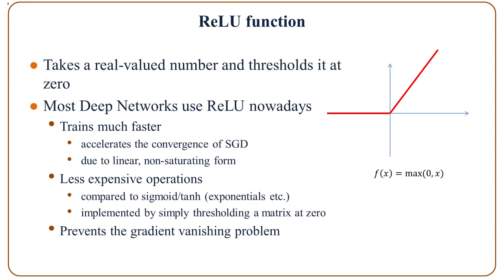The next is the ReLU function. It takes a real-valued number and thresholds it at 0. Most deep neural networks use this nonlinearity nowadays because it converges much faster, involves less expensive operations, and also prevents the gradient vanishing problem.